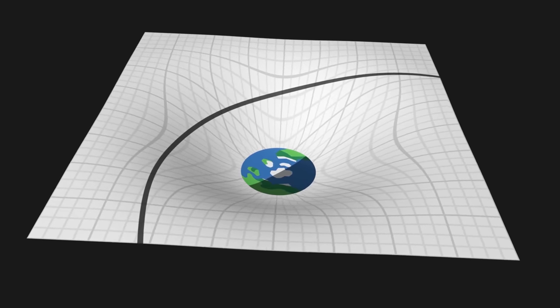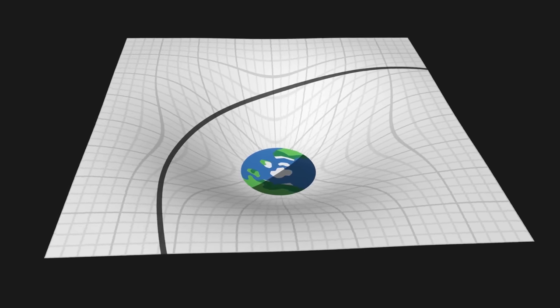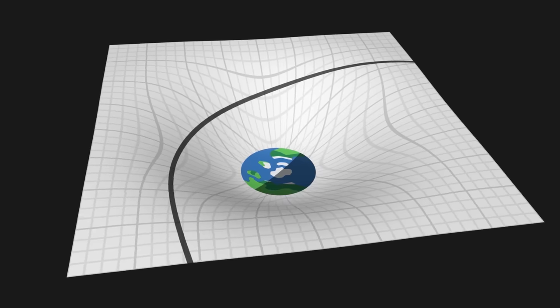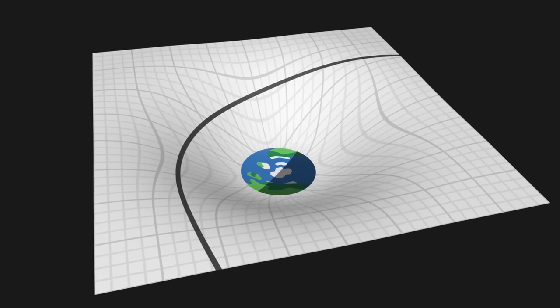When they fall, objects move straight ahead, but the curvature of space-time gives us the impression that these trajectories are deflected.